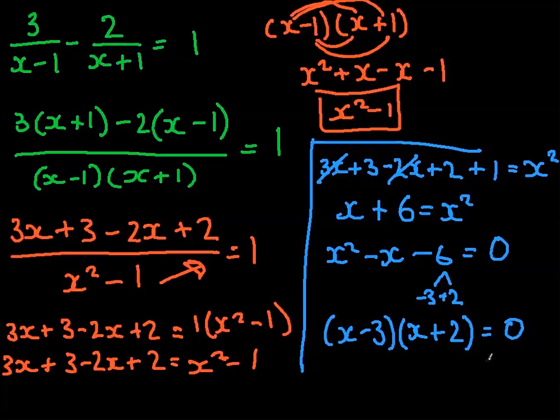And because we have this equal 0, we need to get rid of it, and that makes x equals 3, or x equals minus 2. And that's how we've solved this equation.